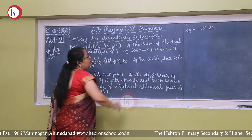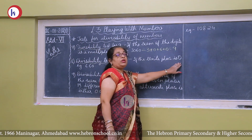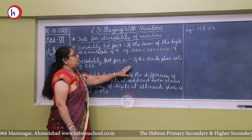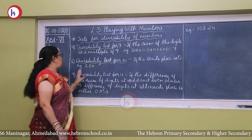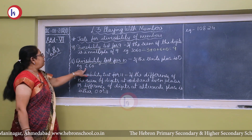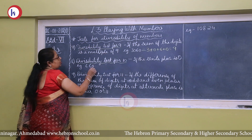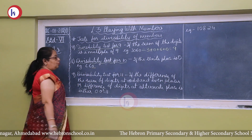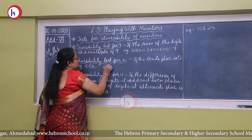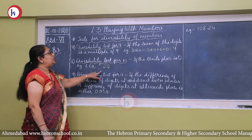Next, the divisibility test for 10: if the unit place is 0 — not 5 — then the number is divisible by 10. For example, 660 has unit place 0, so it is divisible by 10. Similarly, 20 has unit place 0, so it is also divisible by 10.